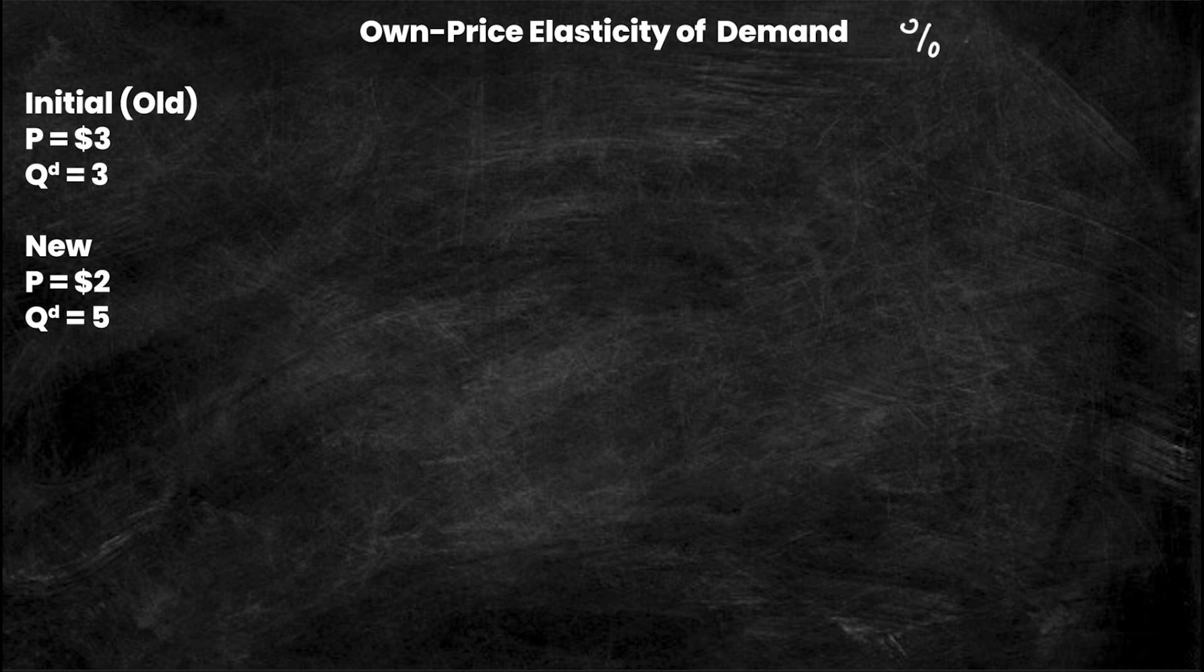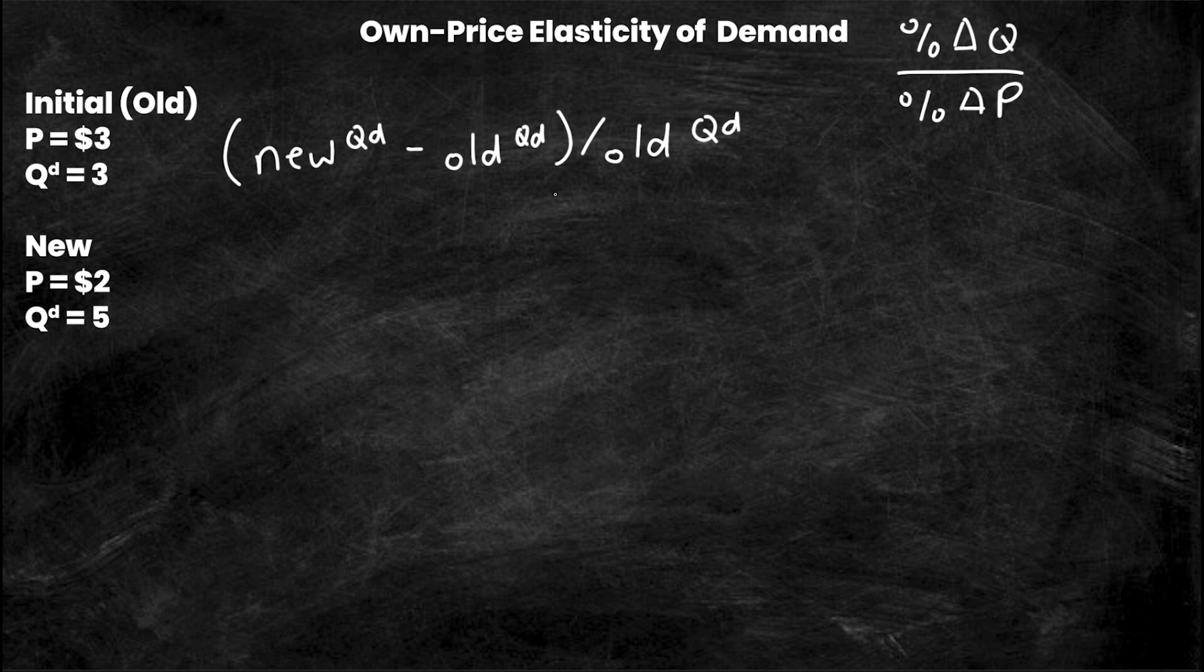The formula at the top is percentage change in Q divided by percentage change in P, but now new minus old over old will be flipped. So we have new QD minus old QD in brackets over old QD. I'm not going to write times 100 because those times 100s will cancel out. The bottom is new P minus old P over old P. Now all I need to do is take these numbers and sub them into the equation.